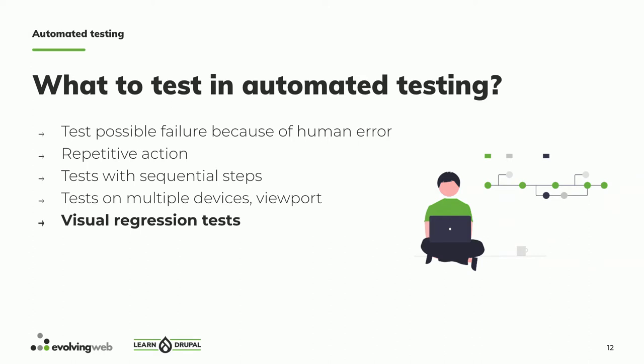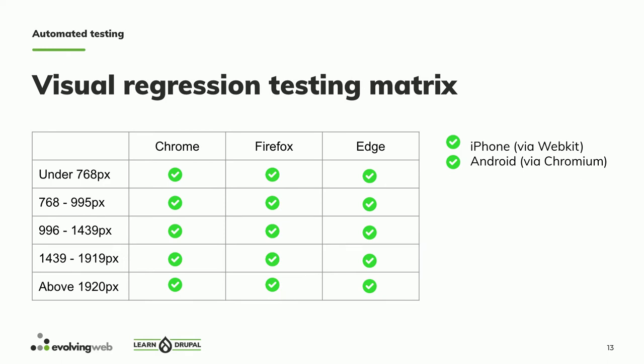In automated testing, these are the kinds of tests we can do: some repetitive actions, actions that could be caused by human error like submitting a form, multiple step validation, or testing on multiple devices and viewpoints — which is very important. That points to the visual regression test. For example, this is our visual regression test matrix: testing a single page on three browsers with different viewpoints and screen dimensions, covering iPhone and Android. Doing all that manually would take a lot of time and is not sustainable.